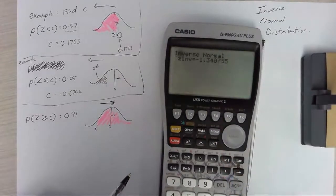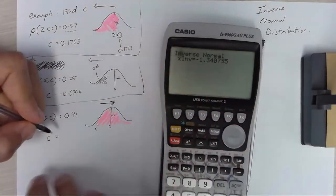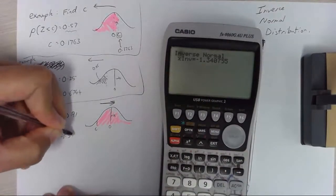standard normal distribution. Calculate it. I get an answer of c equals negative 1.340.